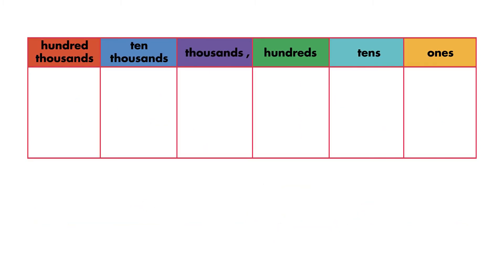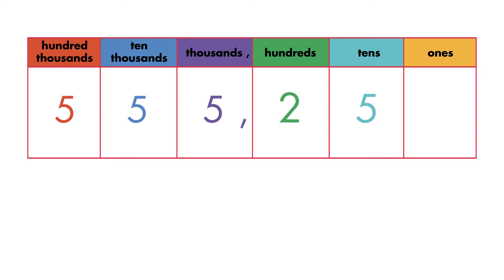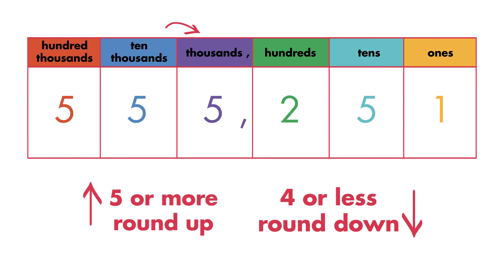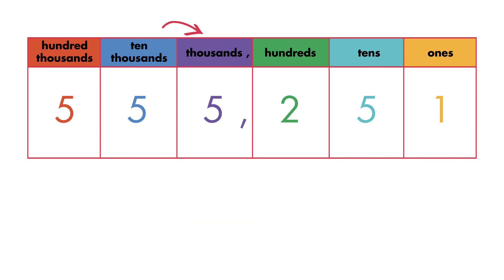Here is another way to round a number. Look at the digit to the right of the place that you are rounding to. To round the number 555,251 to the nearest 10,000, look at the thousands place. If the number to the right of the place you are rounding to is 5 or greater, round up. If the number is 4 or less, round down. The number in the thousands place here is 5 or greater, so round up to 560,000.